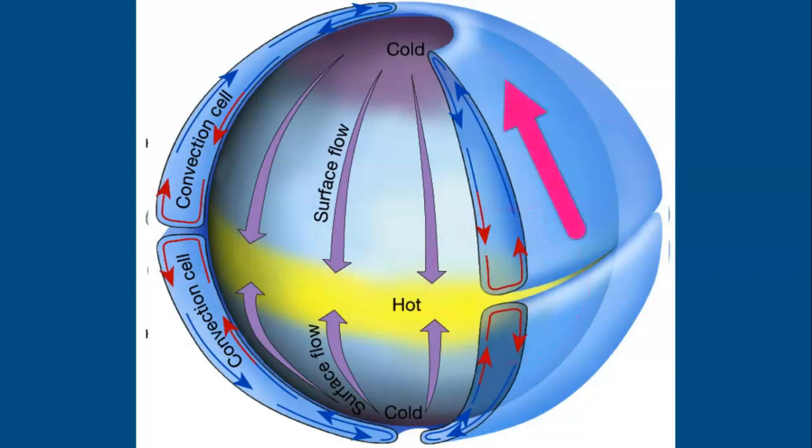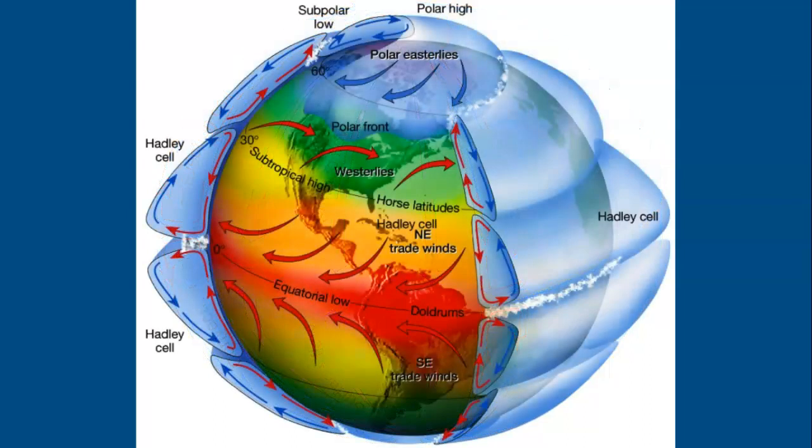The cooling air would sink towards the poles. And then it would go along the land and start to warm up again, rising at the equator to complete that cycle. Again, if Earth was simple, this is how air would move in the atmosphere.